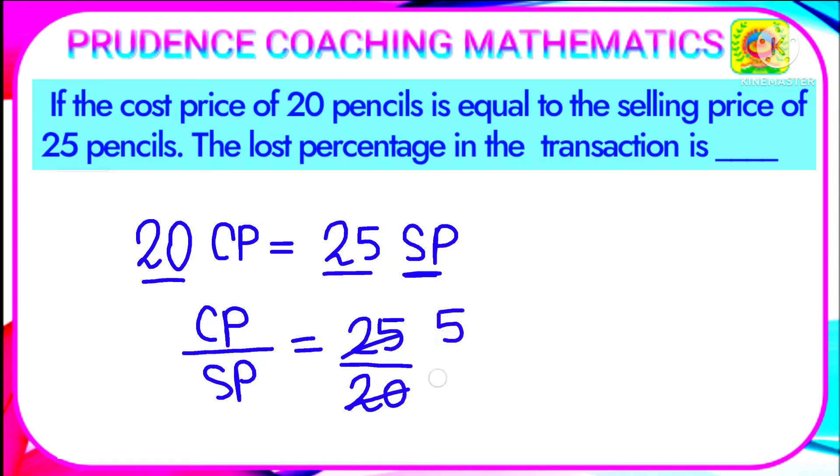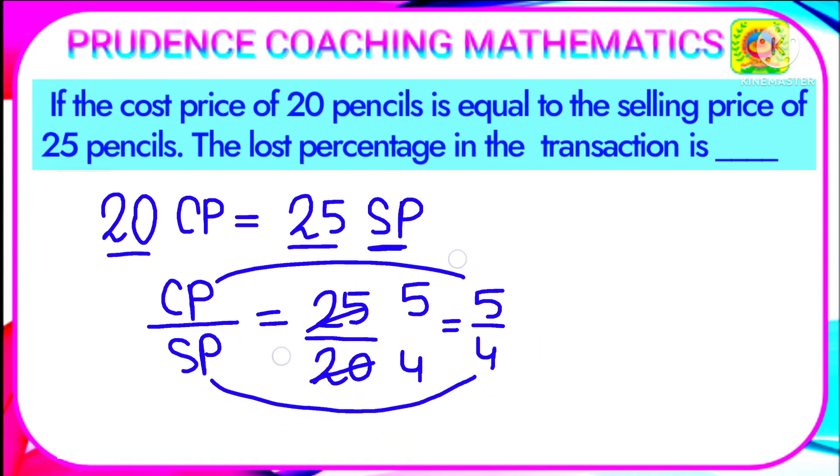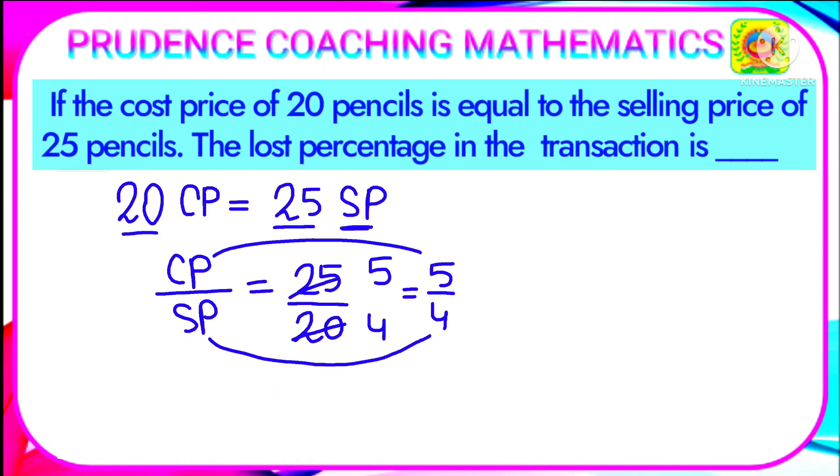Five fives are 25 and five fours are 20, so we are getting the ratio of CP and SP as 5:4. Here CP is 5 units in ratio and SP is 4 units in ratio. We all know that if CP is more than SP, that means it is a loss.